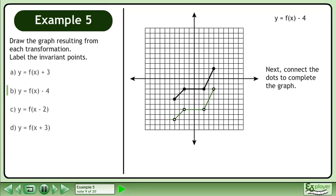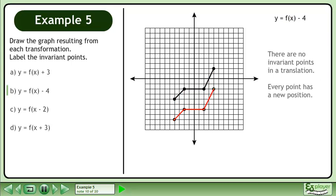Begin by moving all the points on the graph down 4 units. Next, connect the dots to complete the graph. There are no invariant points in a translation — every point has a new position.